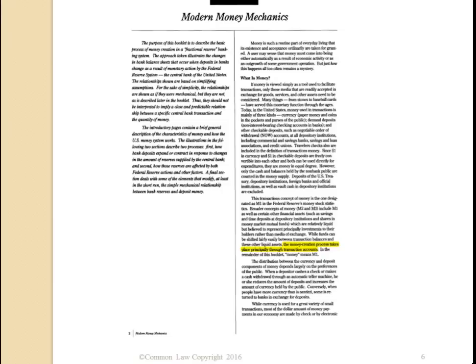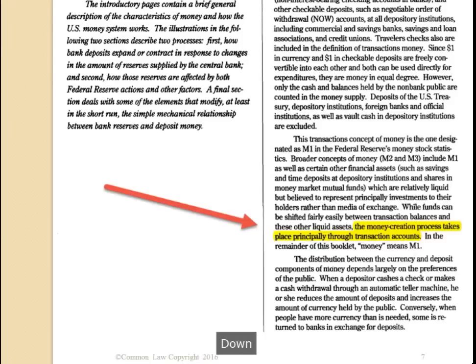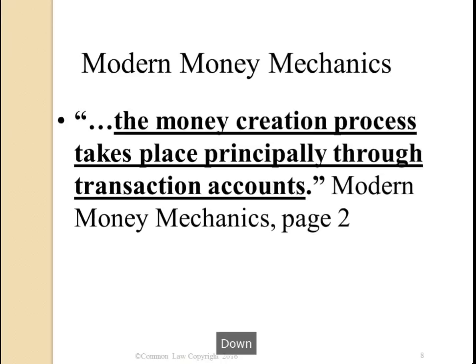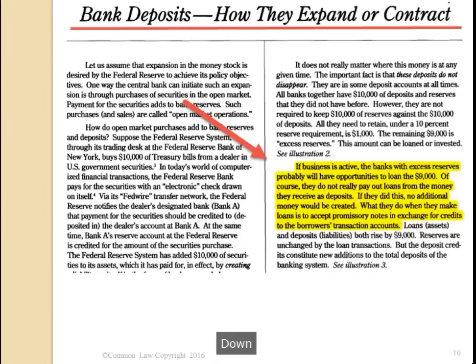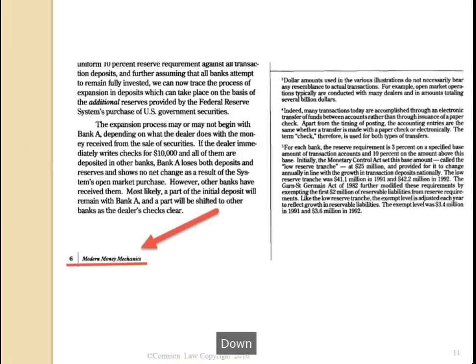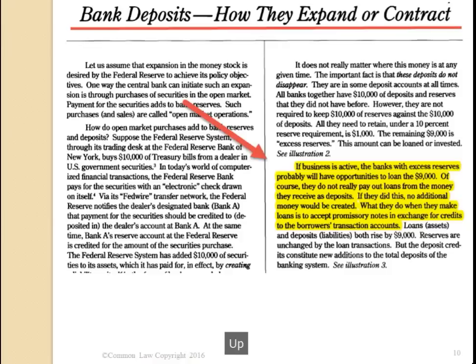The highlighted portion says: 'The money creation process takes place principally through transaction accounts.' That's on page two. On page six, it discusses how bank deposits expand and contract.